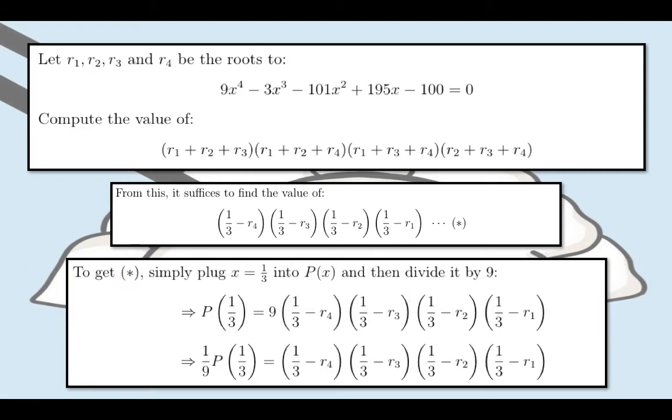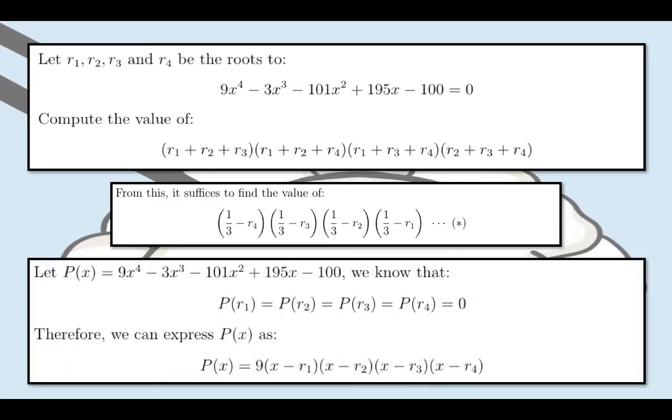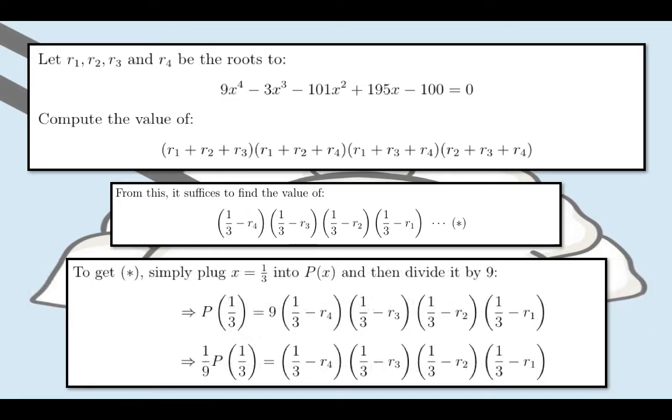To get star, we simply plug x equals 1 third into P of x and then divide by 9. Note how if we substitute 1 third into P of x, we will get the expression 9 times 1 third minus r sub 1 times 1 third minus r sub 2 times 1 third minus r sub 3 times 1 third minus r sub 4.